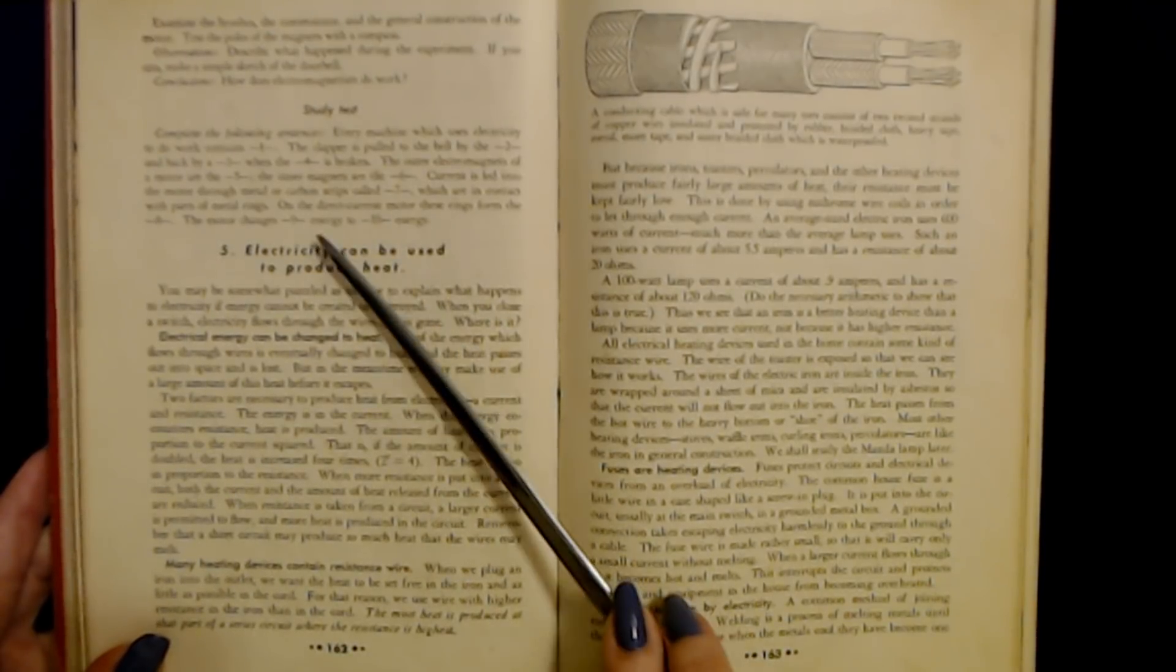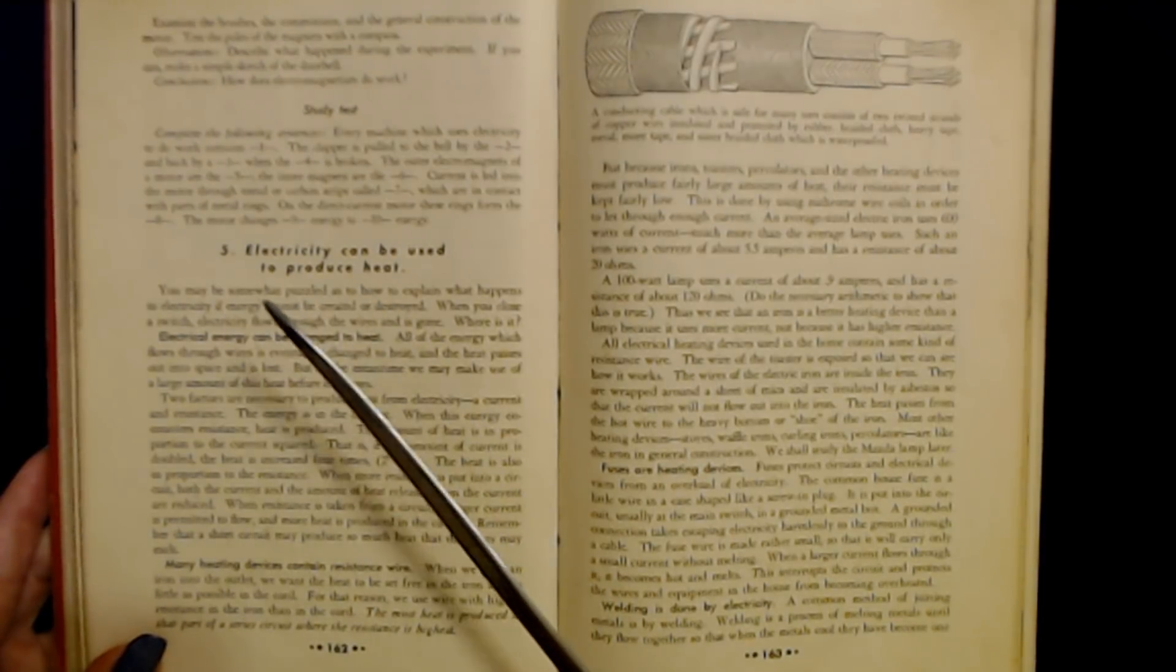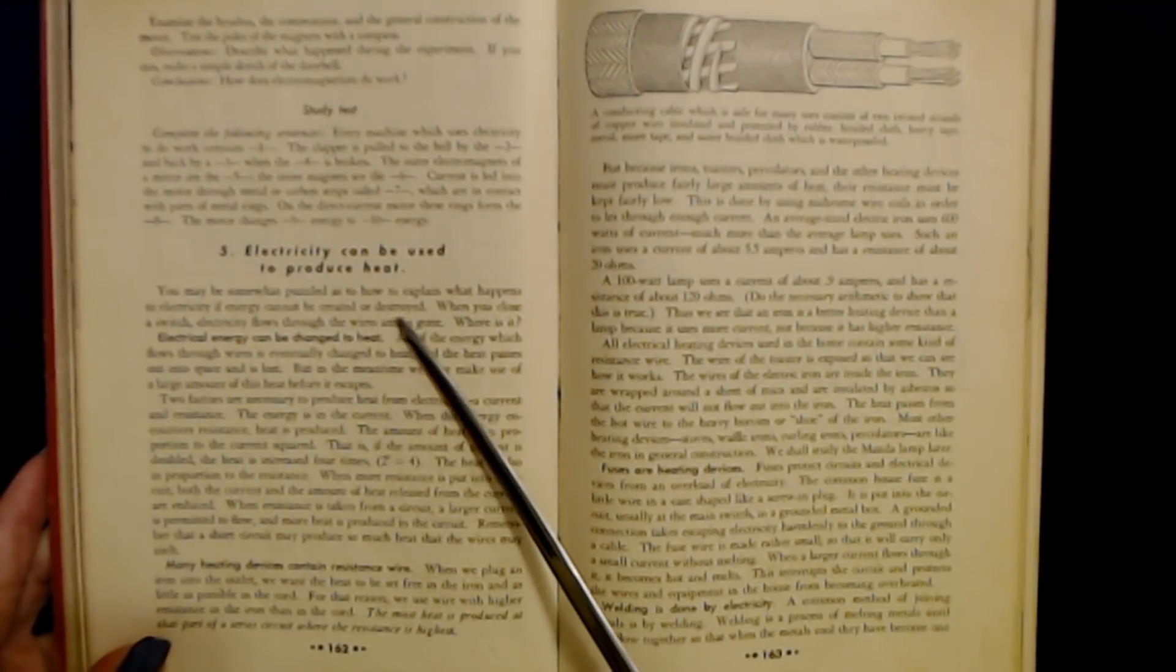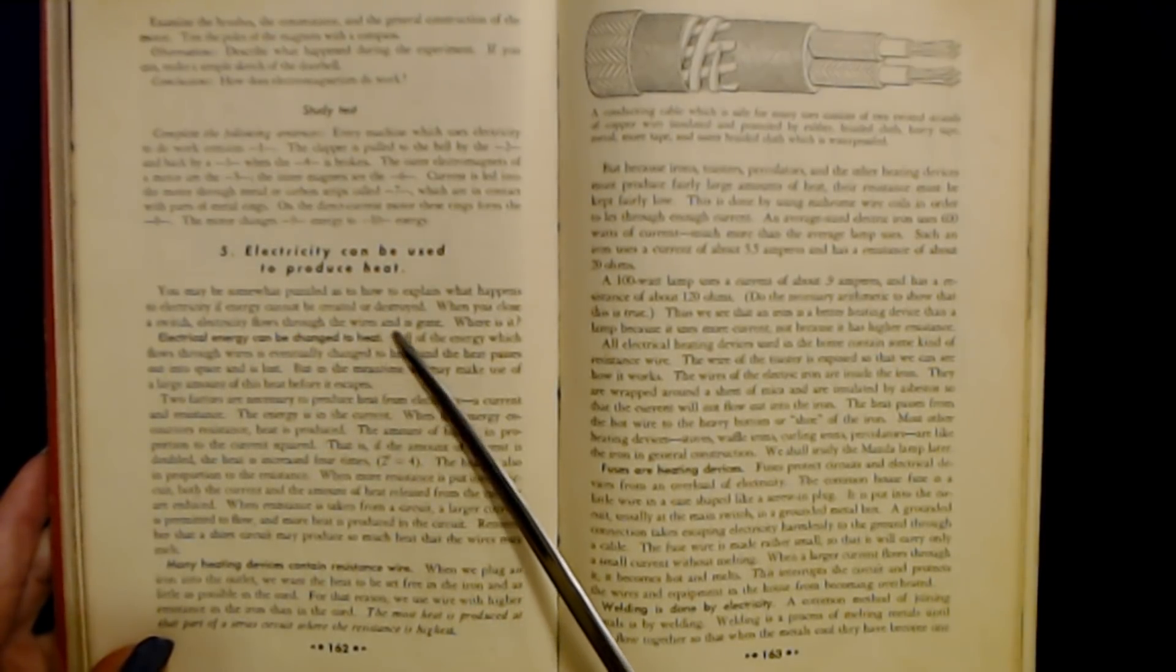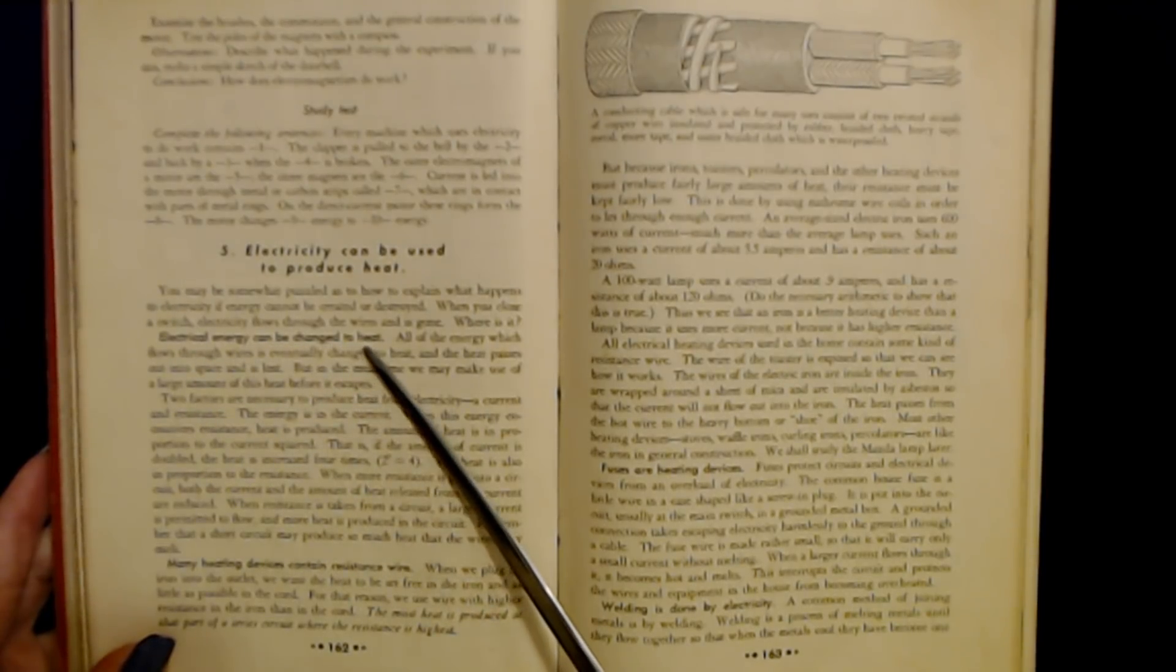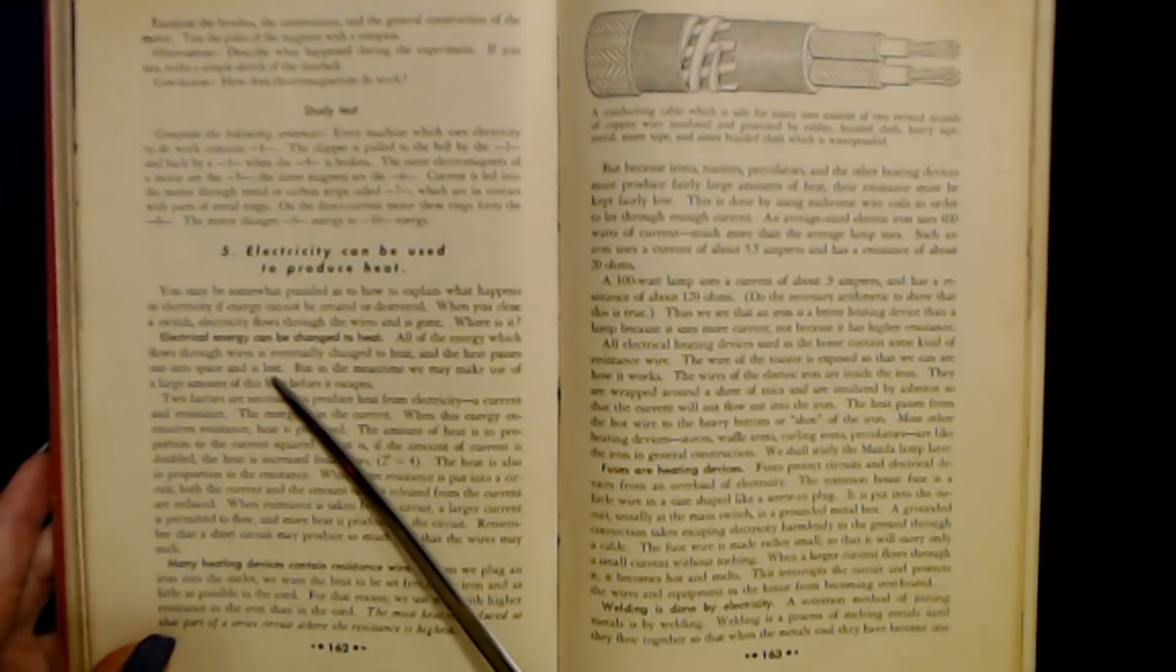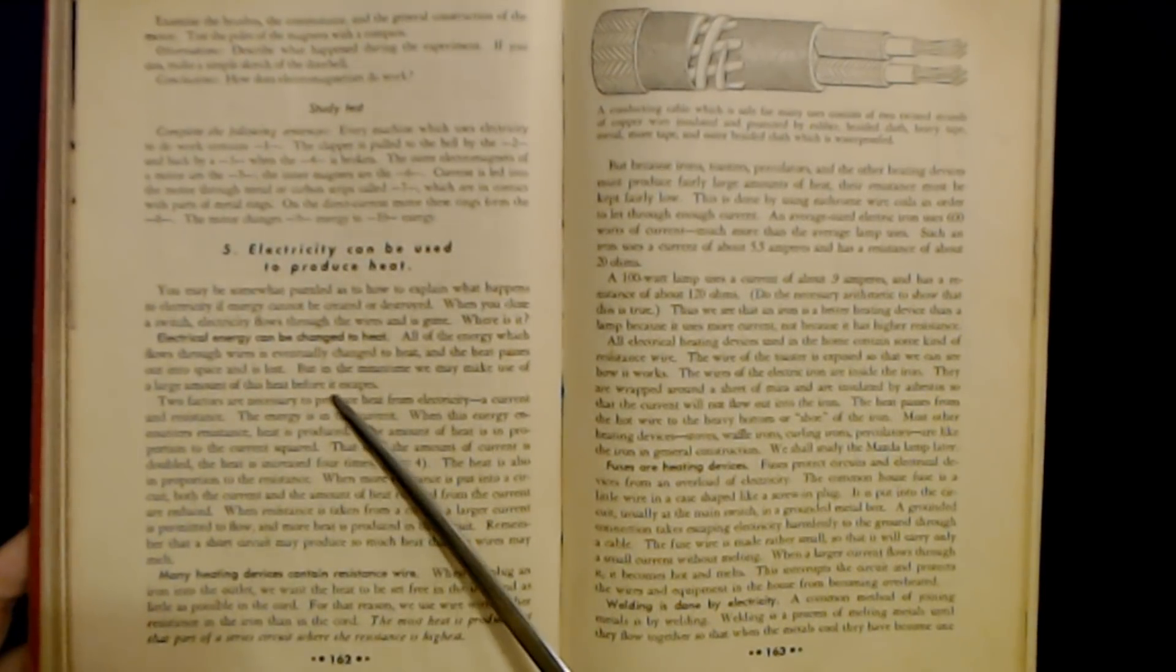Down here in section 5 we have this: Electricity can be used to produce heat. You may be somewhat puzzled as to how to explain what happens to electricity if energy cannot be created or destroyed. When you close a switch, electricity flows through the wires and is gone. Where is it? Electrical energy can be changed to heat. All of the energy which flows through wires is eventually changed to heat and the heat passes out into space and is lost. But in the meantime, we may make use of a large amount of this heat before it escapes.